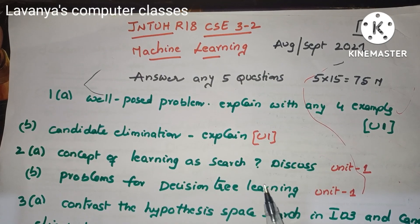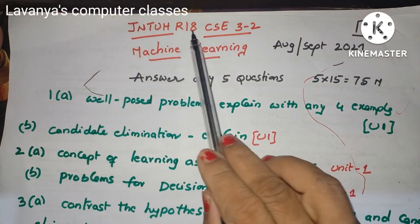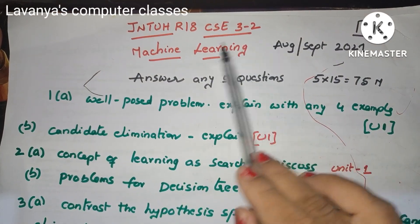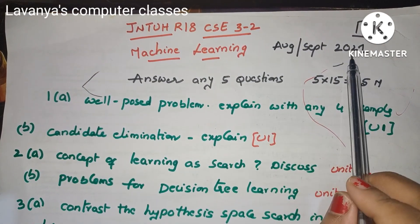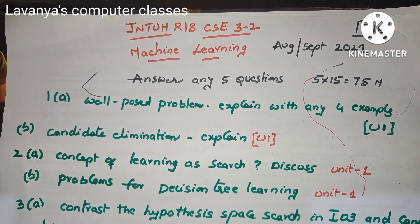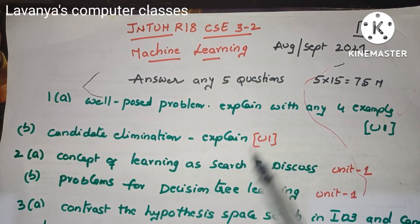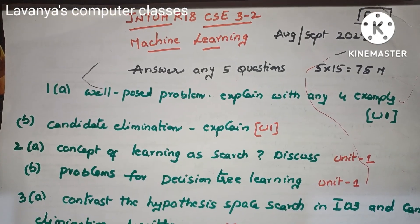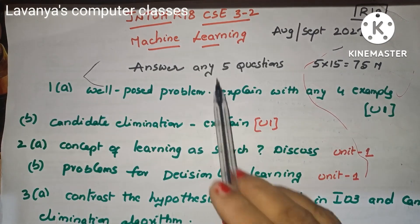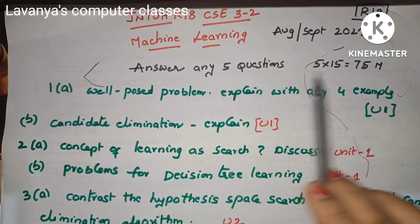Welcome back to Lavanya's Computer Classes. In this video I will explain the Machine Learning old question paper — JNTUH R18 CSC32, August 2021. This paper is already kept in my shorts and videos. I will show the same paper at the end, but now I'm analyzing which questions come from which units. This is a COVID pattern paper: answer any 5 questions out of 8, totaling 75 marks.